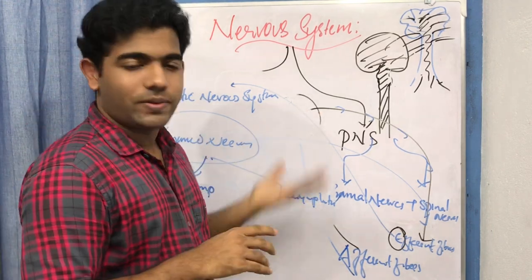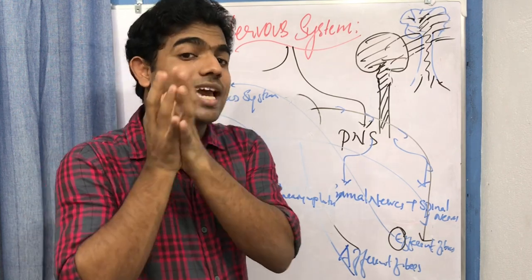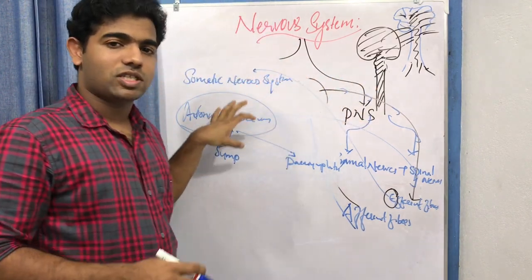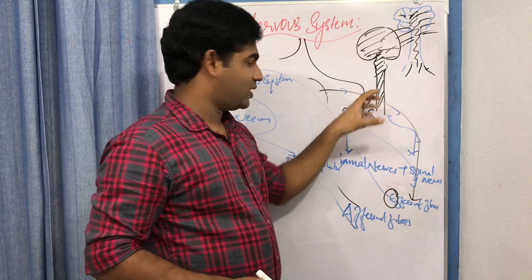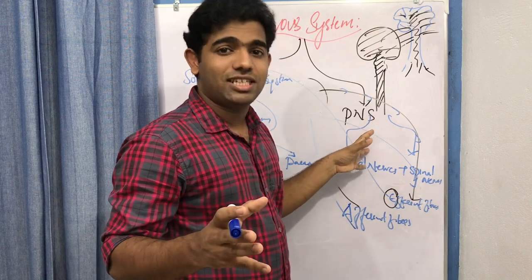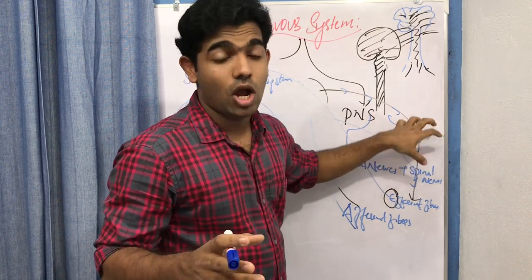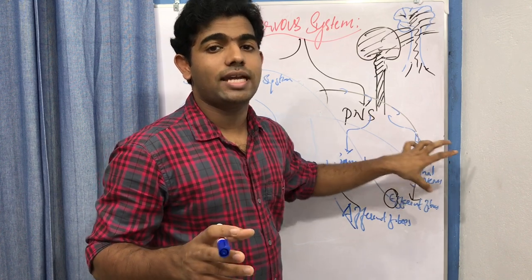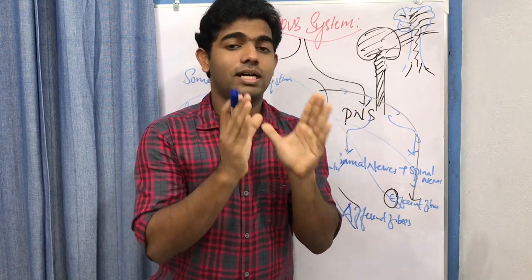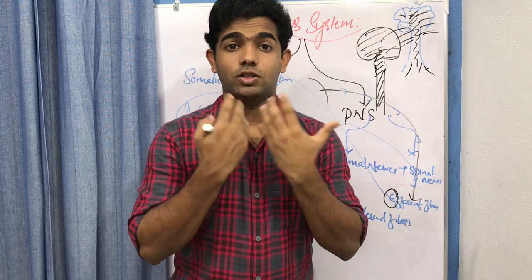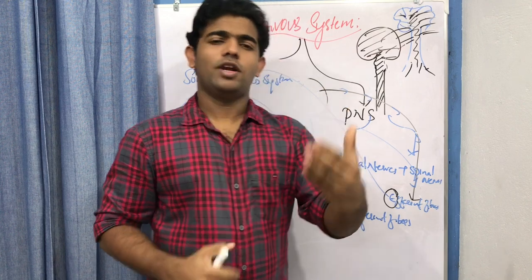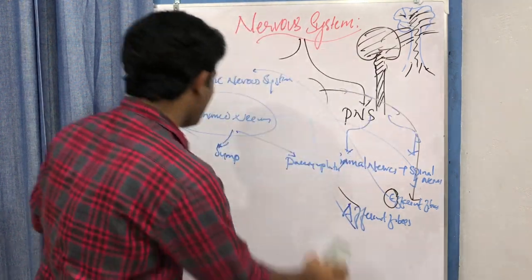To summarize the building blocks: the nervous system includes central and peripheral nervous systems. The central nervous system is made up of the brain and spinal cord. The peripheral nervous system is made up of cranial nerves and spinal nerves, divided into somatic and autonomic nervous systems. The autonomic is further divided into sympathetic and parasympathetic. Always remember the difference between afferent and efferent fibers — we will need it throughout our neuroanatomy sessions.